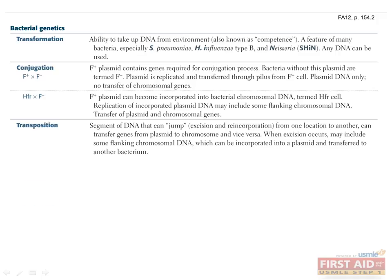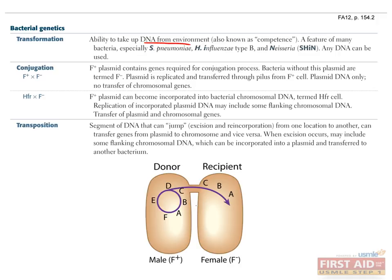Transformation occurs when bacteria take up free DNA from the environment and begin to express it. Conjugation occurs when genetic material is transferred from a donor, or male F-plus bacterium carrying an F-plasmid, to a recipient bacterium — the F-female — that does not contain the F-plasmid.